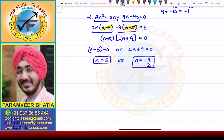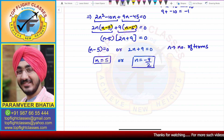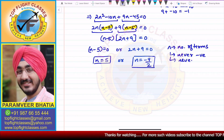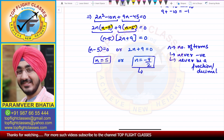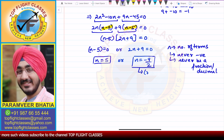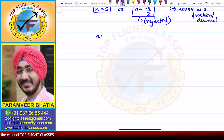N is the number of terms, so it can never be negative and it can never be a fraction or decimal. In this case, N = minus 9 by 2 is both negative and a fraction. Therefore, this value is rejected, and the value of N is 5.